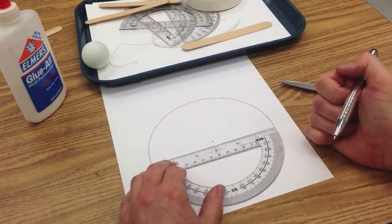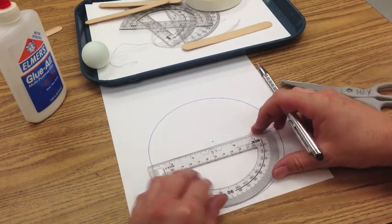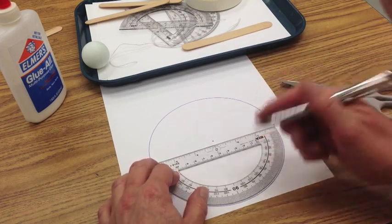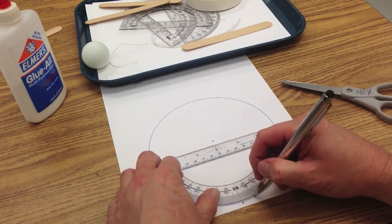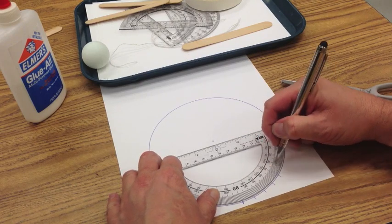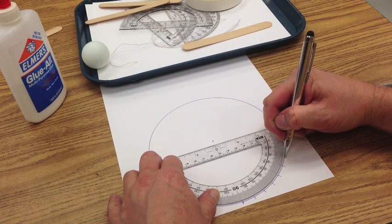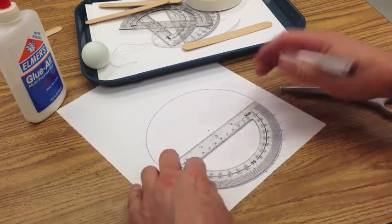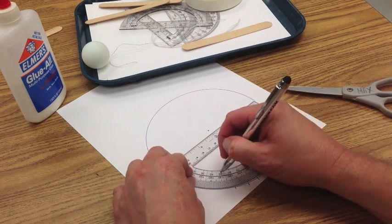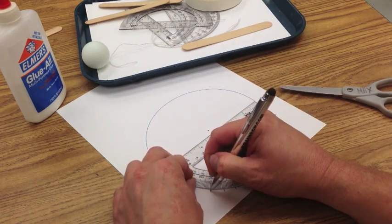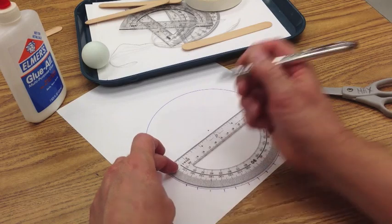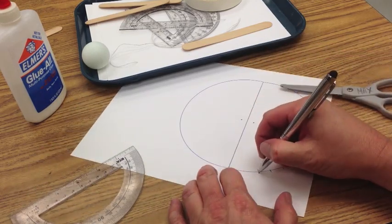Then go back in, and line it up, and you want to go ahead and put your tick marks. 90, 80, 70, 60, 50, 40, 30, 20. Here, take that away. Go back in.